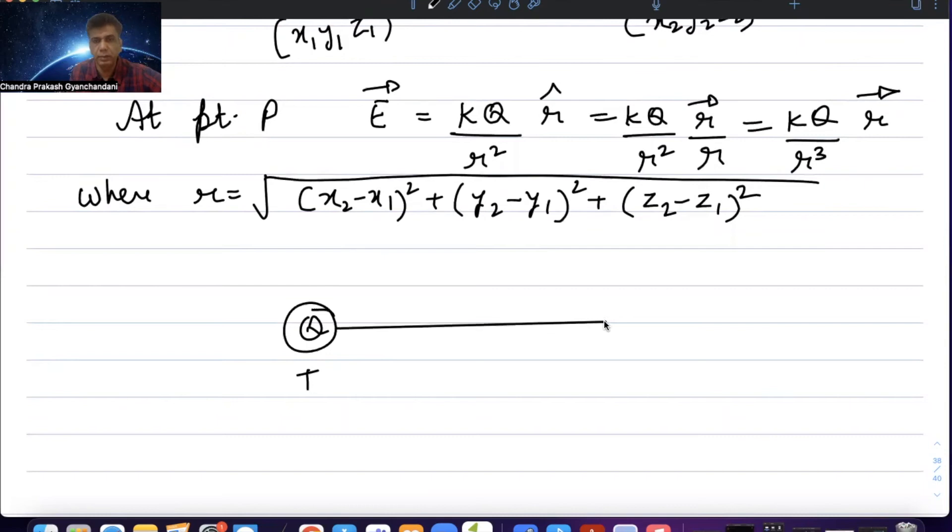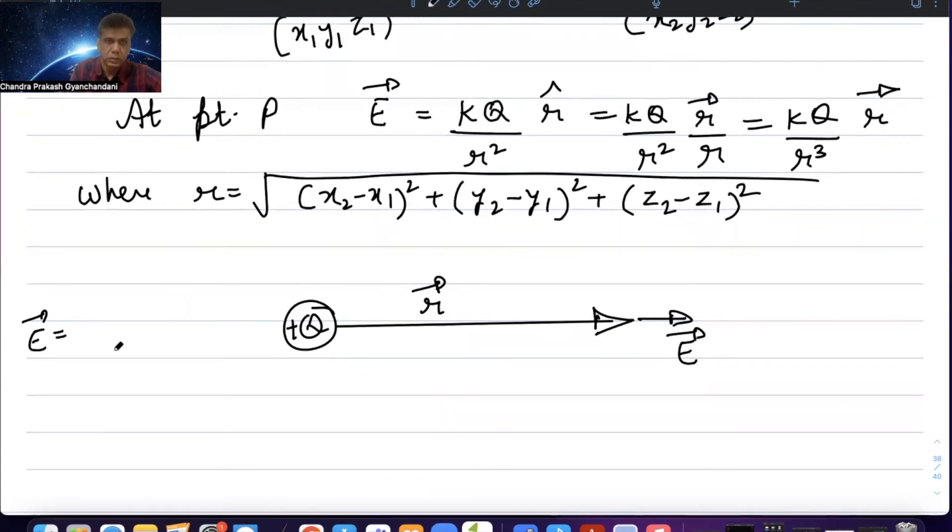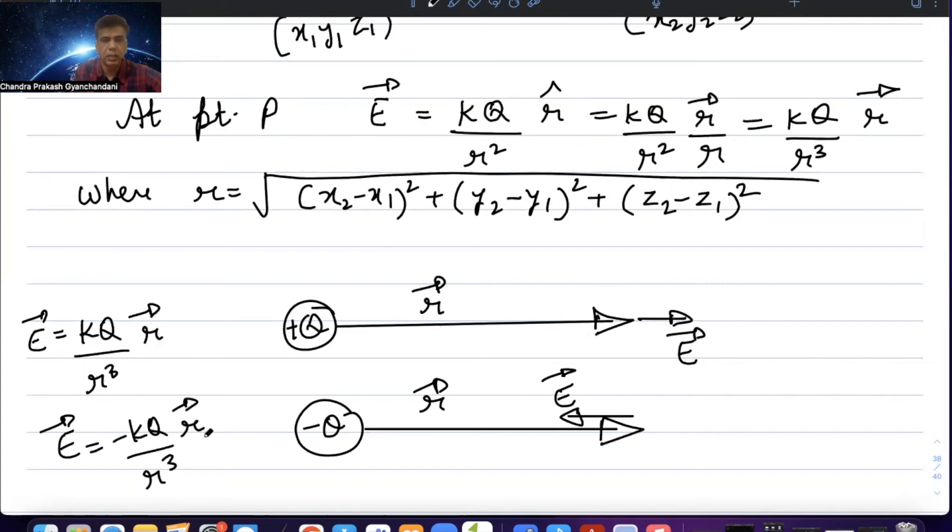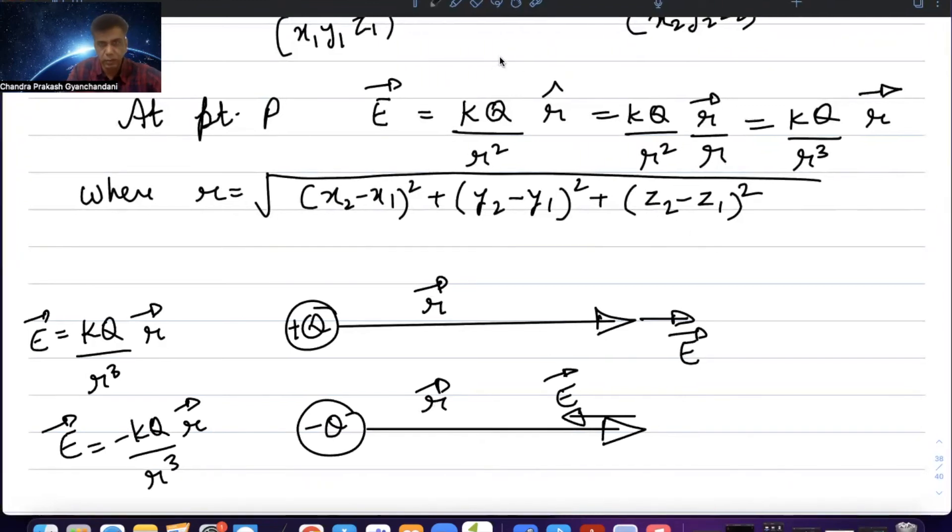If your source is positive, the field will match the direction of r vector. If your source is negative, then the field will be opposite to the direction of r vector, which is k Q upon r squared r hat.